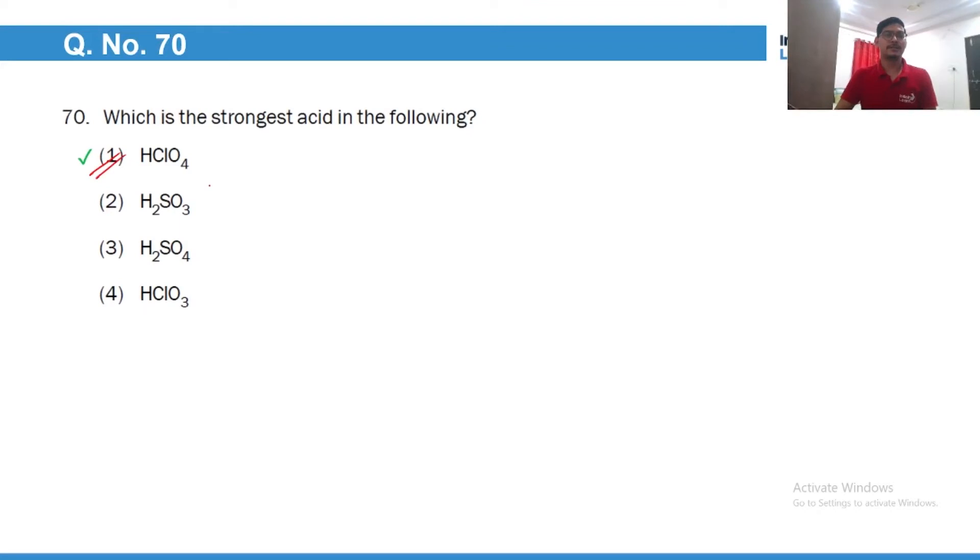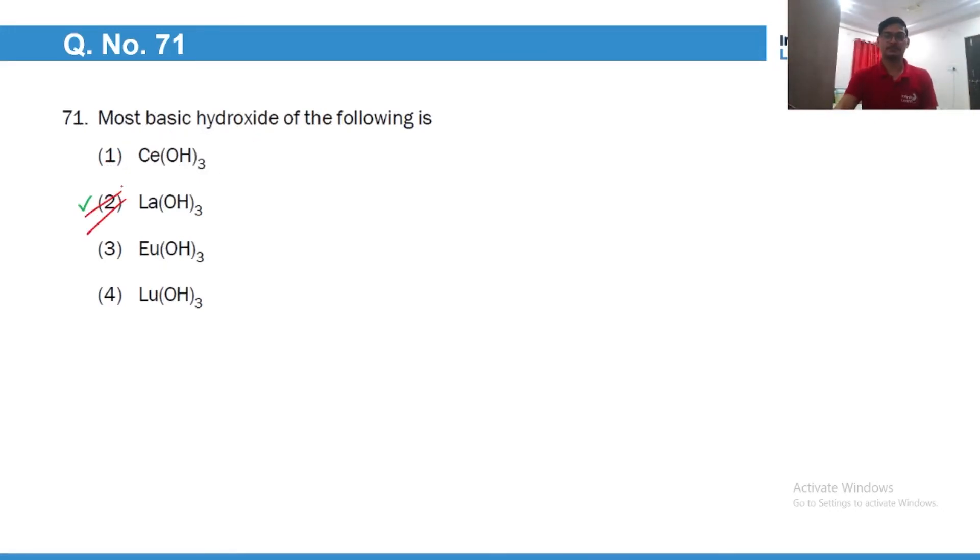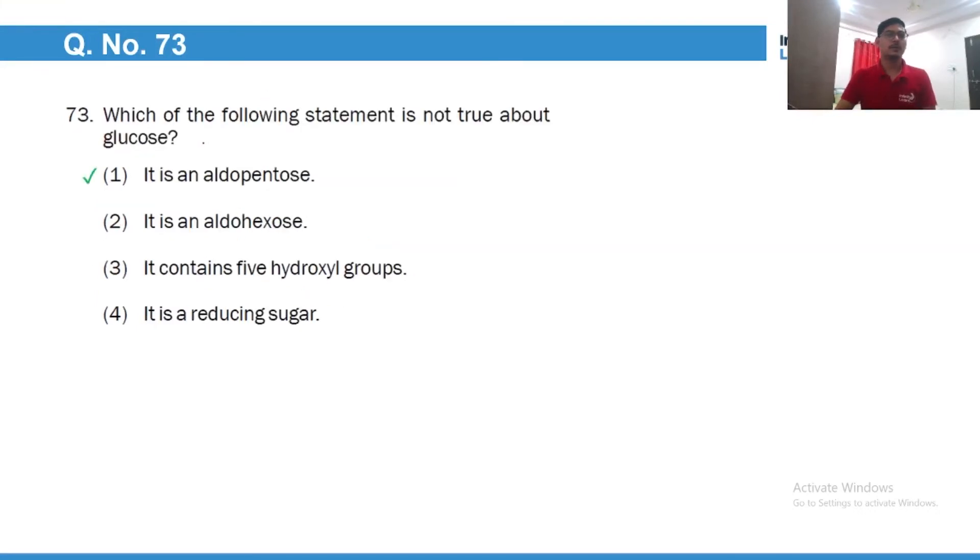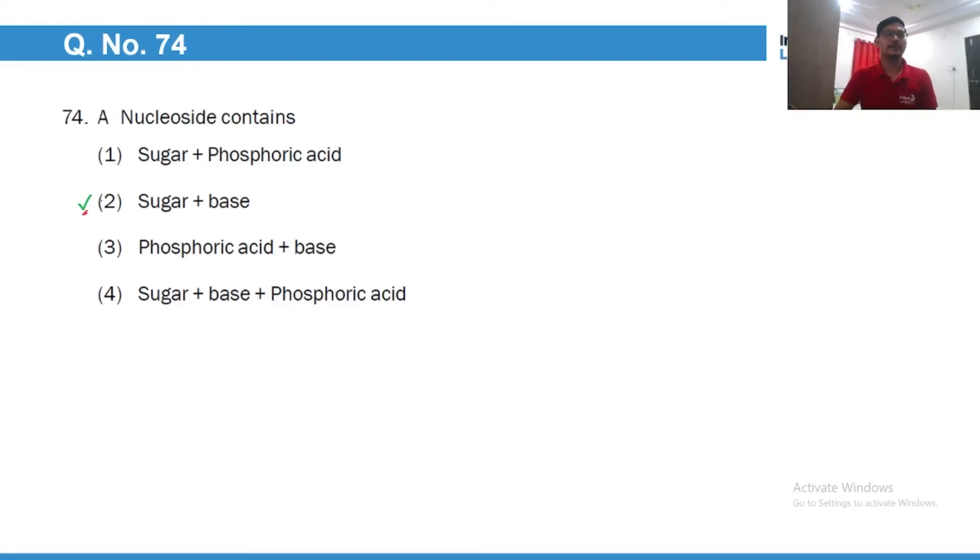HClO4 is the strongest acid because it has highest oxidation state and chlorine is electronegative. Most basic hydroxide is lanthanum because of lanthanide contraction. Of course the IUPAC name would be potassium hexacyanoferrate. You can calculate the oxidation state which will come out to be plus two. So this will be the correct answer. Glucose contains six carbon atoms so it is an aldohexose, it is not an aldopentose. A nucleoside contains a five carbon sugar and nitrogenous base, whereas a nucleotide contains five carbon sugar, nitrogenous base, and phosphoric acid.